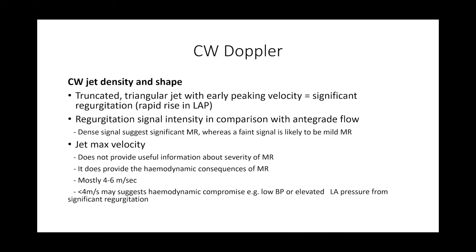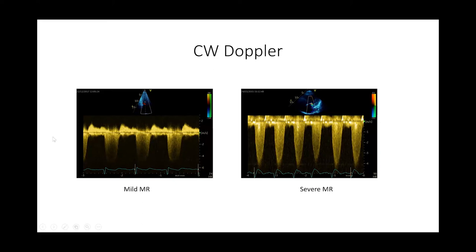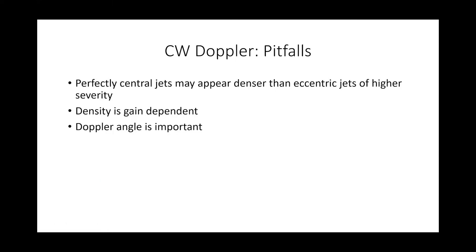The maximum MR jet velocity is not useful for assessing severity per se, but it provides important information about hemodynamic consequences. In severe MR, velocity is typically between 4–6 m/s; if less than 4 m/s, it may suggest elevated left atrial pressure. On the left, a faint signal with parabolic shape indicates mild MR; on the right, a very dense triangular signal indicates severe MR. Pitfall: a central jet appears dense, whereas an eccentric jet may not show a dense signal. Doppler angle alignment and gain settings are also important as gain can change apparent density.